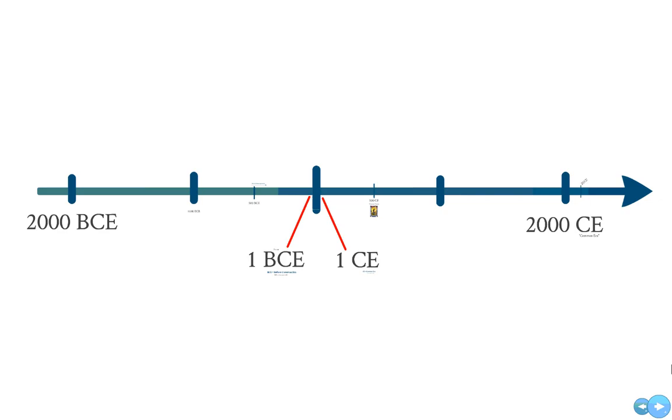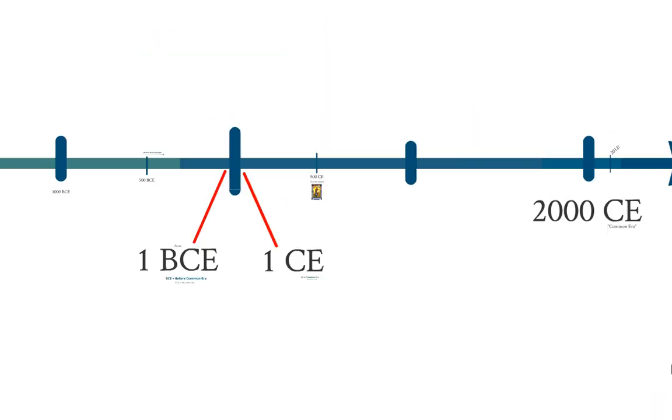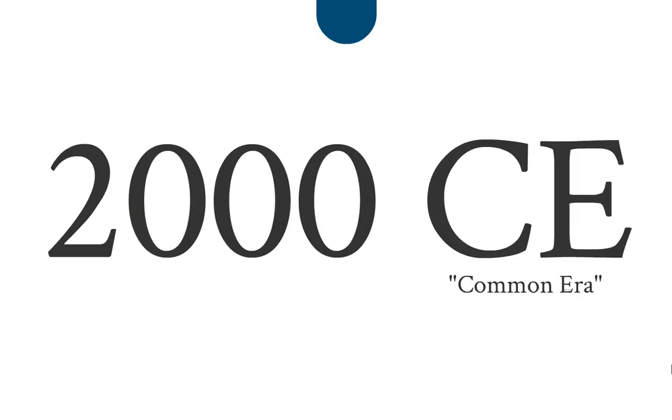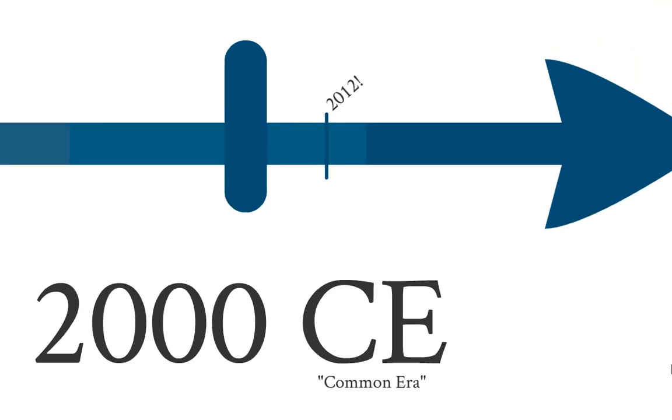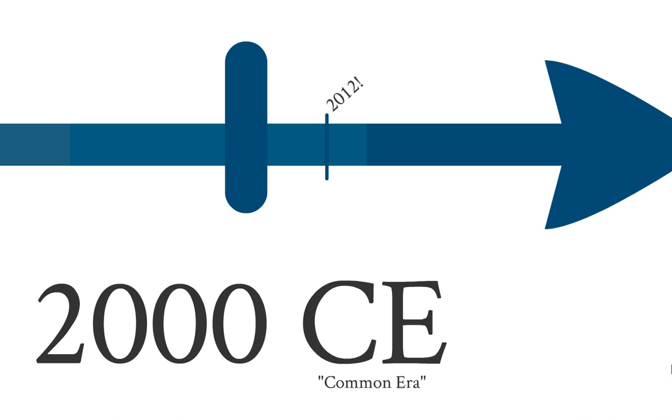I also want to look at how we can read year dates in BCE or BC. So here's a timeline. At one end we have 2000 BCE. At the other end we have 2000 CE or Common Era. You'll notice that that's where 2012 is, 2012 CE.